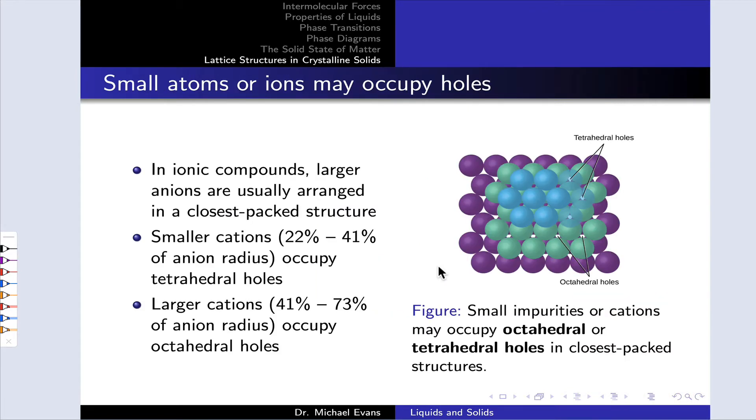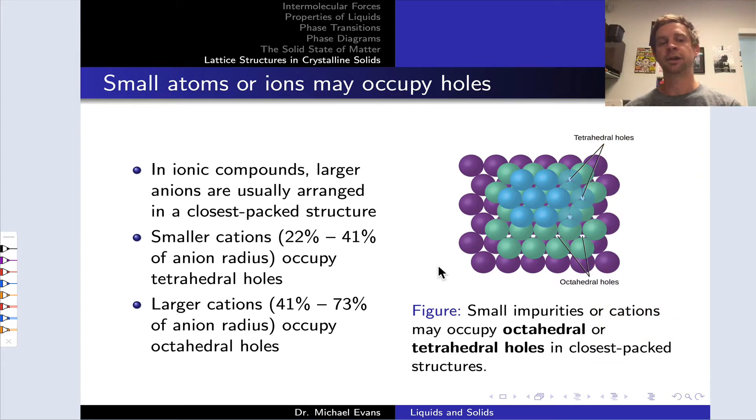If we think about a typical structure of an ionic solid, we've got a relatively large anion paired up with a relatively small cation. A very typical situation for ionic compounds that are crystalline is that the larger anions often pack into a closest-packed cubic or hexagonal crystal structure, and the much smaller cations fill up the empty space in that closest-packed lattice, essentially filling into holes.